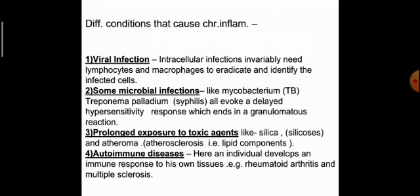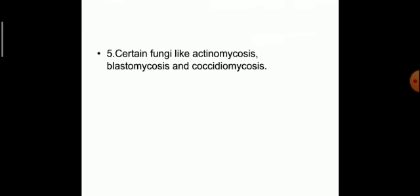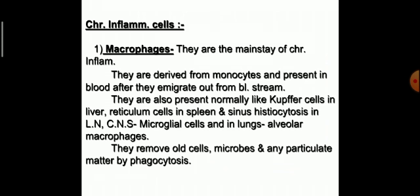In certain autoimmune diseases, there can be chronic inflammation, mainly due to the immune response to one's own tissue, occurring in rheumatoid arthritis and multiple sclerosis. In certain fungal infections like actinomycosis, blastomycosis, and coccidiomycosis, there can also be chronic inflammation.